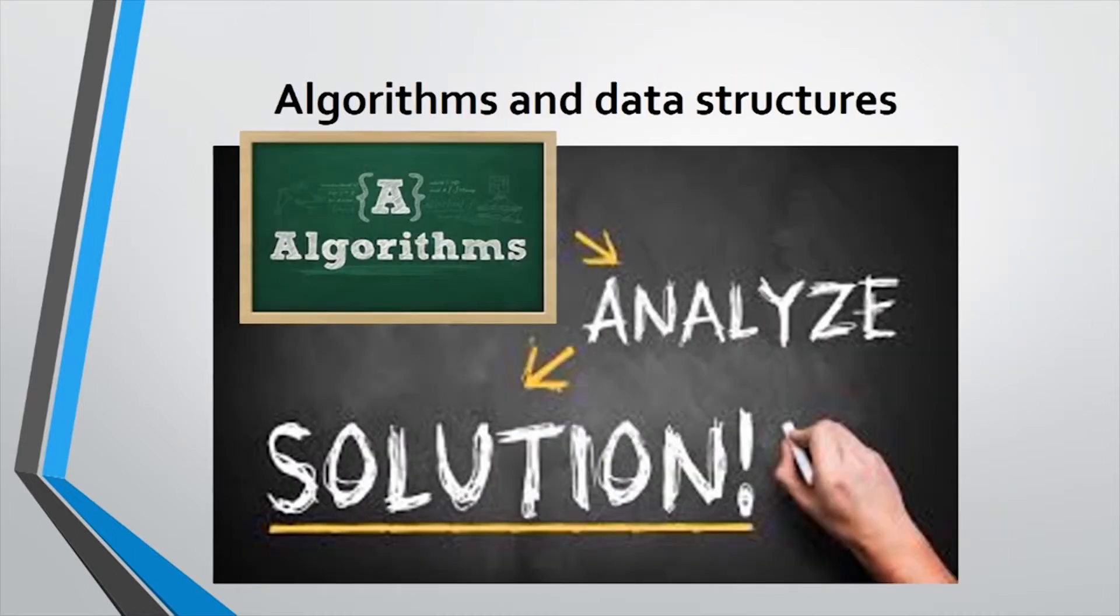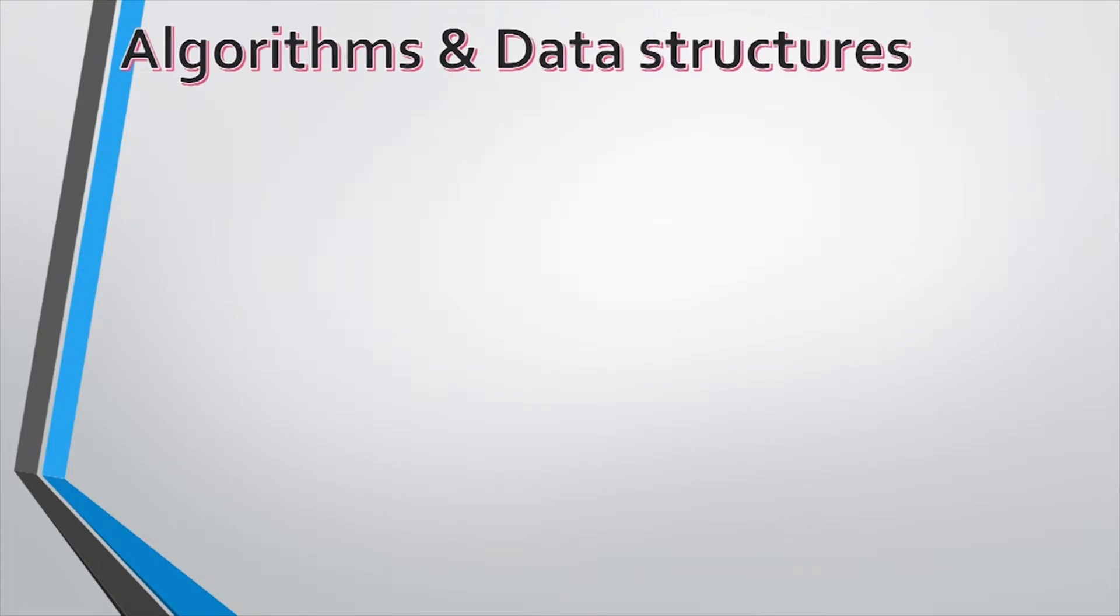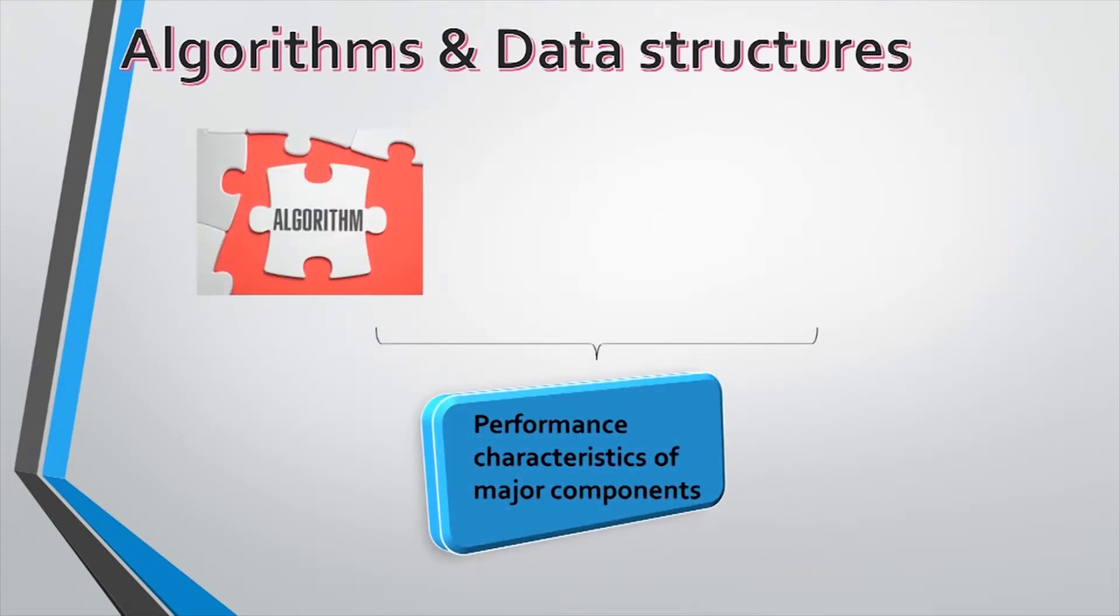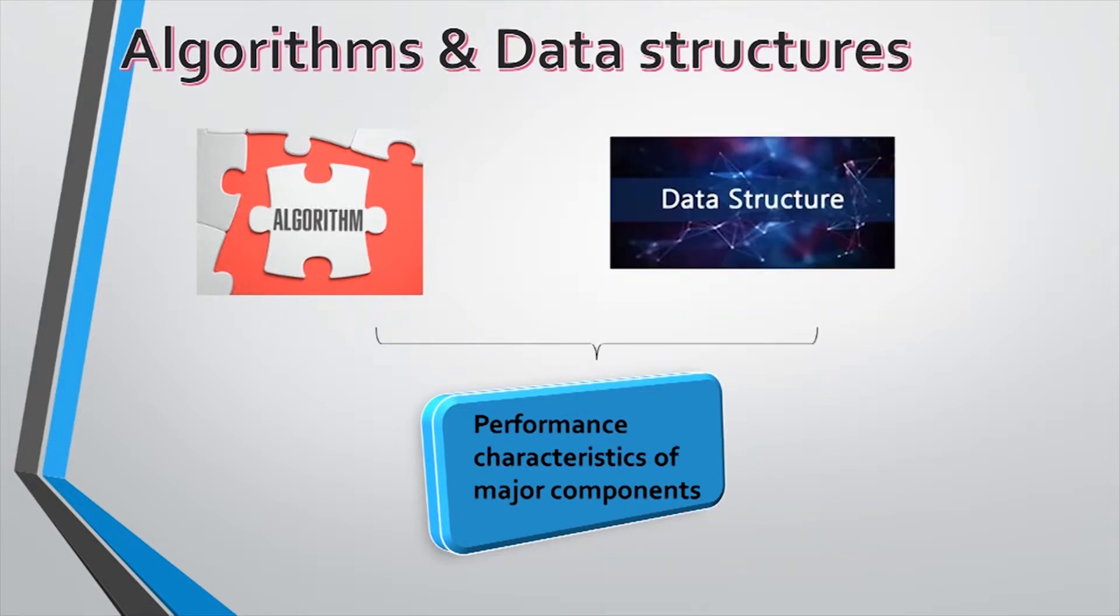Number 2. Algorithms and data structures. This area deals with specific classes of problems and their efficient solutions. The performance characteristics of algorithms and the organization of data relative to different access requirements are major components.